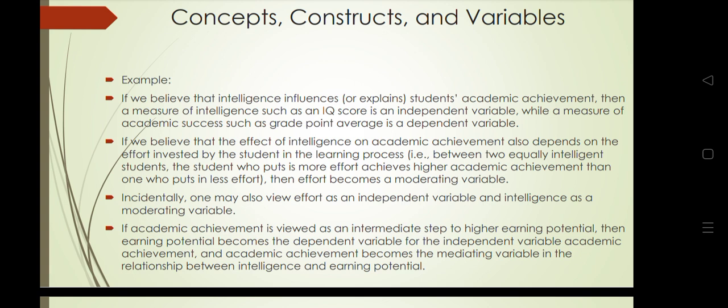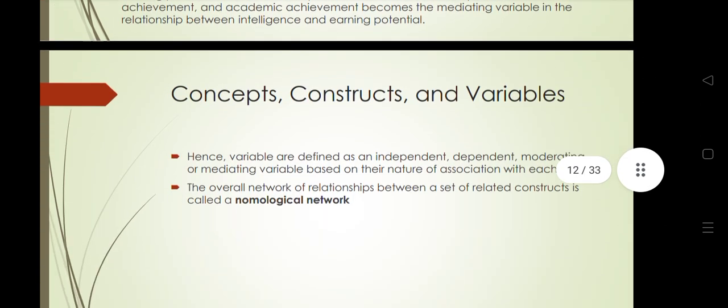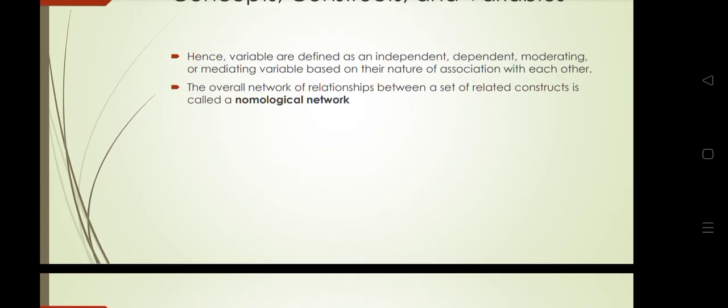Furthermore, if academic achievement is viewed as an intermediate step to higher earning potential, then earning potential becomes the dependent variable with academic achievement as the independent variable. When comparing academic achievement with earning potential, academic achievement becomes the independent variable and earning potential becomes the dependent variable. This concludes our discussion of concepts, constructs, and variables. Thank you for watching.